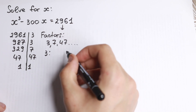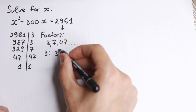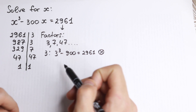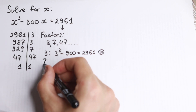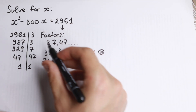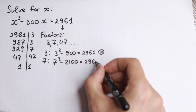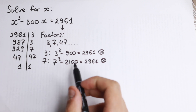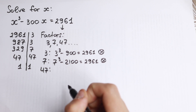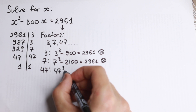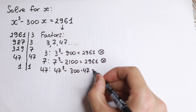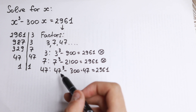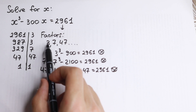Let's start with x = 3. We get 3 cubed minus 300 times 3, which is 27 minus 900, and that does not equal 2961 — absolutely incorrect. Next, x = 7: we get 7 cubed minus 300 times 7, which is 343 minus 2100, and that does not equal 2961 either. Let's check x = 47: 47 cubed minus 300 times 47 — 47 is very large, so this is not going to work for us. As you can see, none of these individual factors is a root.